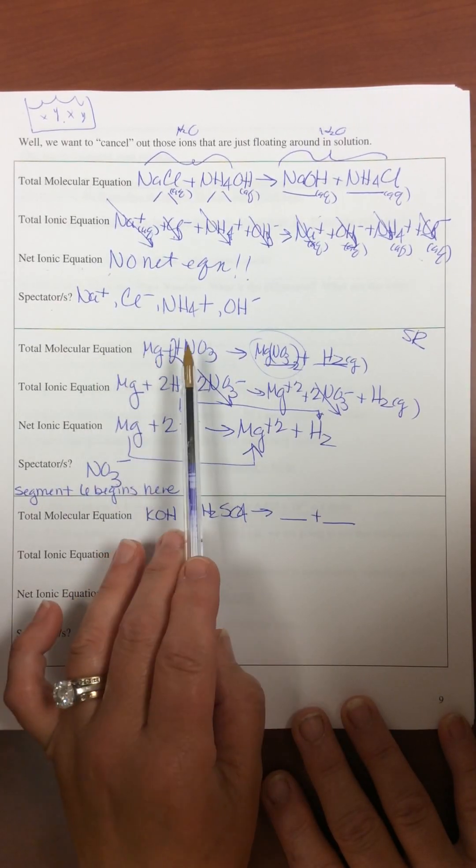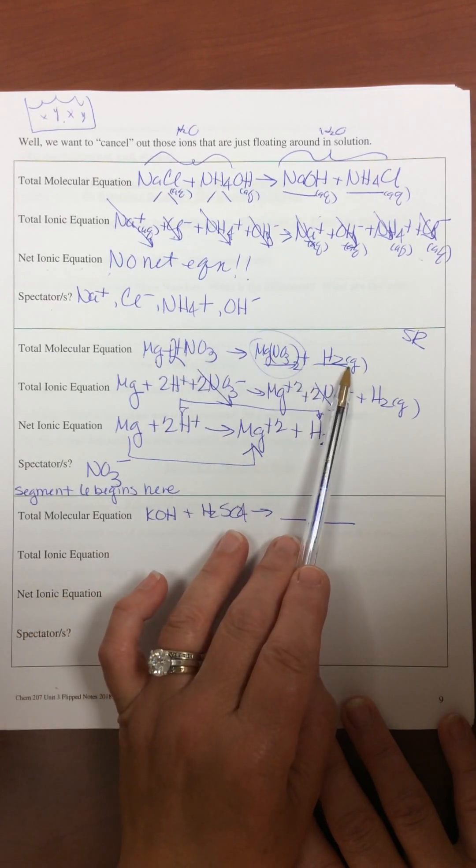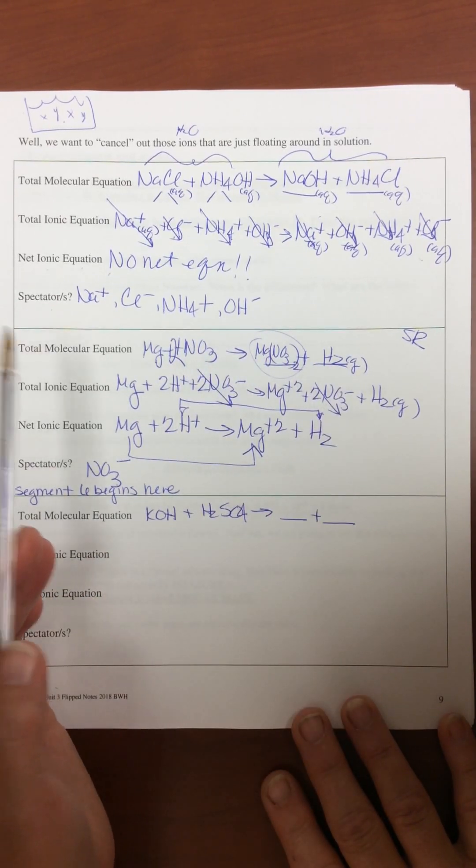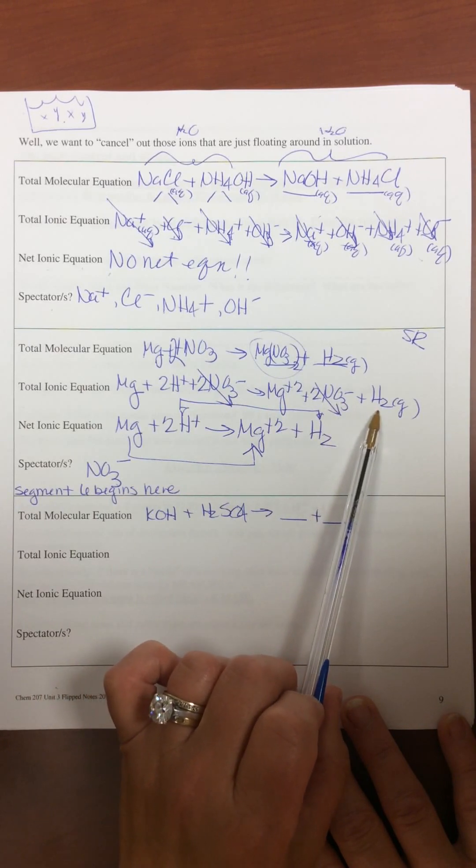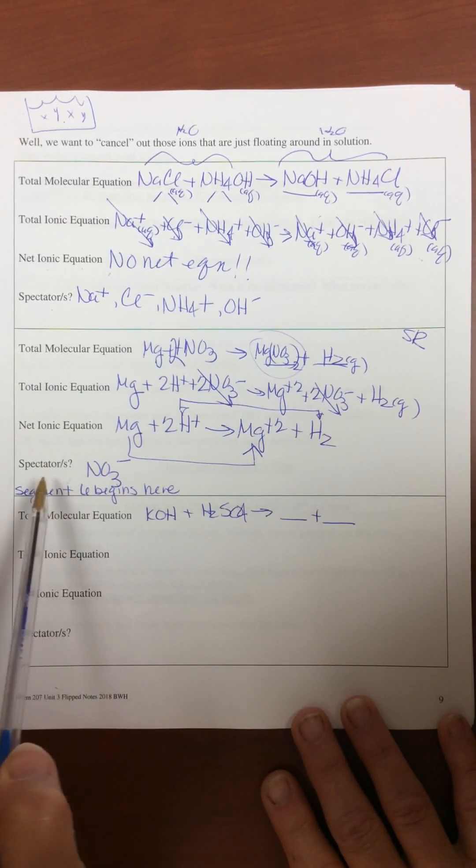Is it a solid? Is it going to be aqueous? Is it going to be a gas? What is it? Then if it's ionic, you have to write it as ionic, and then you have to cross out whatever there is as a spectator.